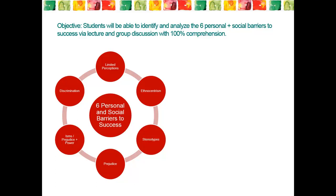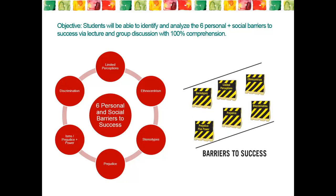The six personal and social barriers we will discuss are listed here on the screen. Richard Butcher, the author of our text, asks: how do we explain why some people are more successful than others? He concludes by sharing that there are sometimes personal as well as social barriers that get in the way of some people being successful while others are not.